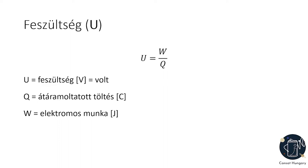Képlettel: az elektromos munka és az átáramoltatott töltés hányadosa a feszültség. Előfordulhat, hogy idegen nyelvű leírásokban a feszültséget nagy V-vel jelölik.